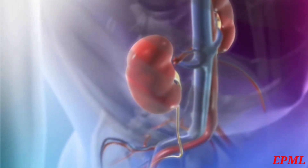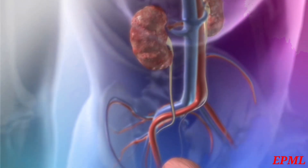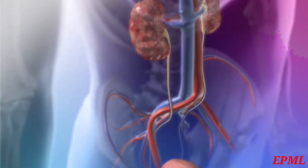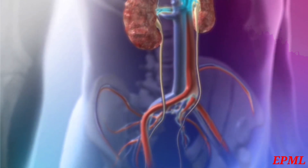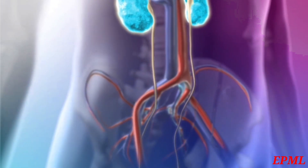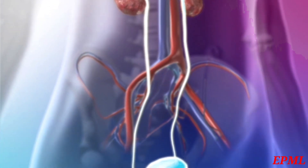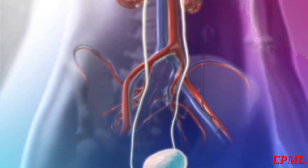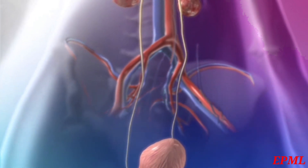Renal failure is a sudden disruption of renal function. The common causes are categorized as pre-renal failure, intrinsic renal failure, and post-renal failure, grouped by the location of the disruption.